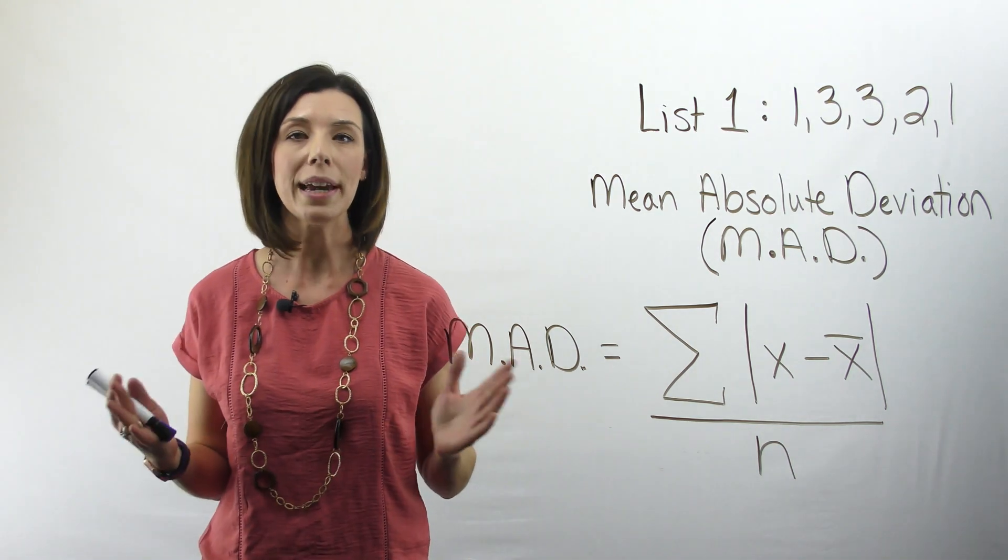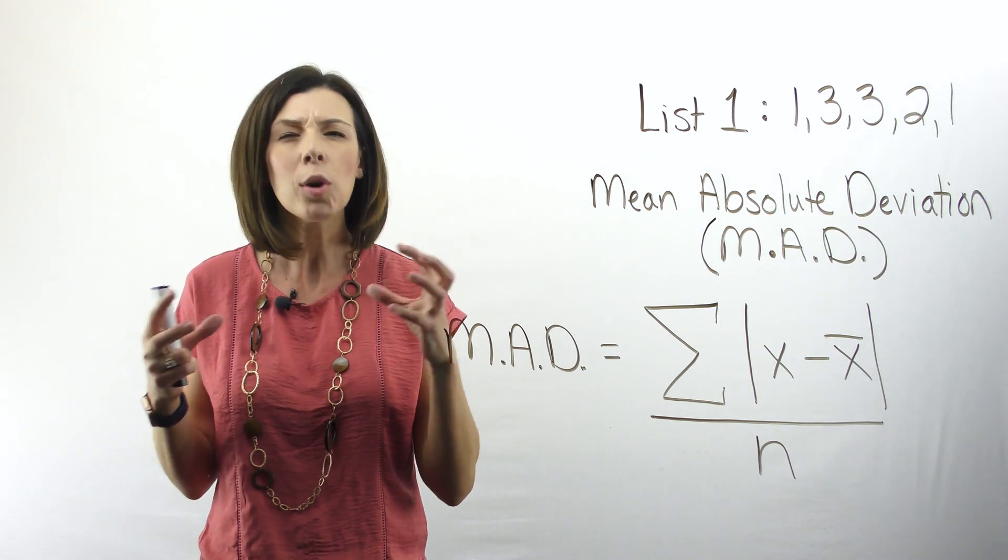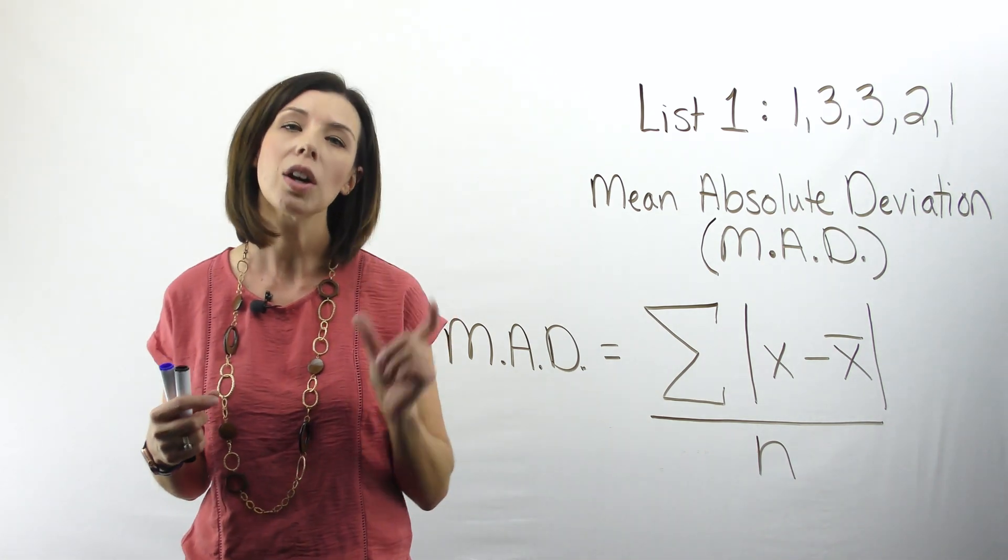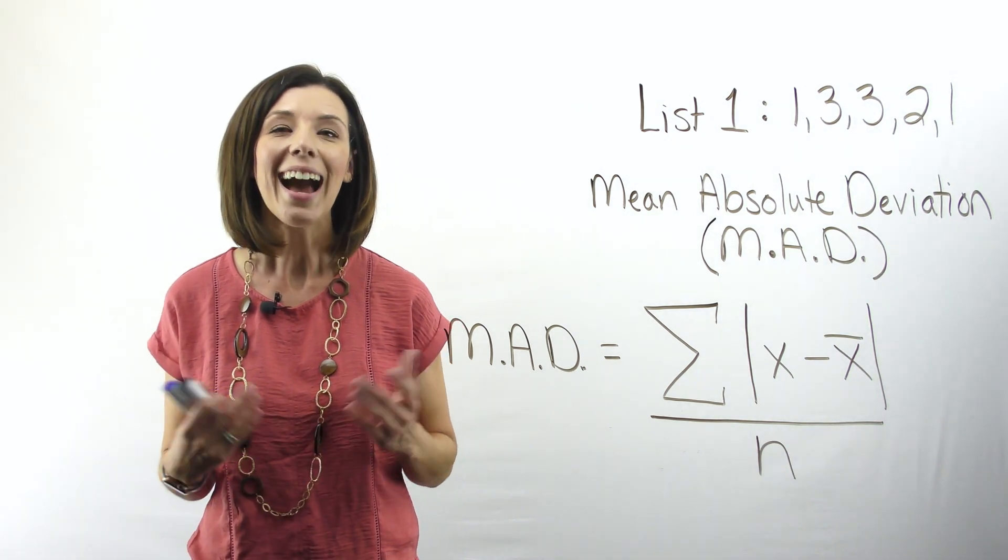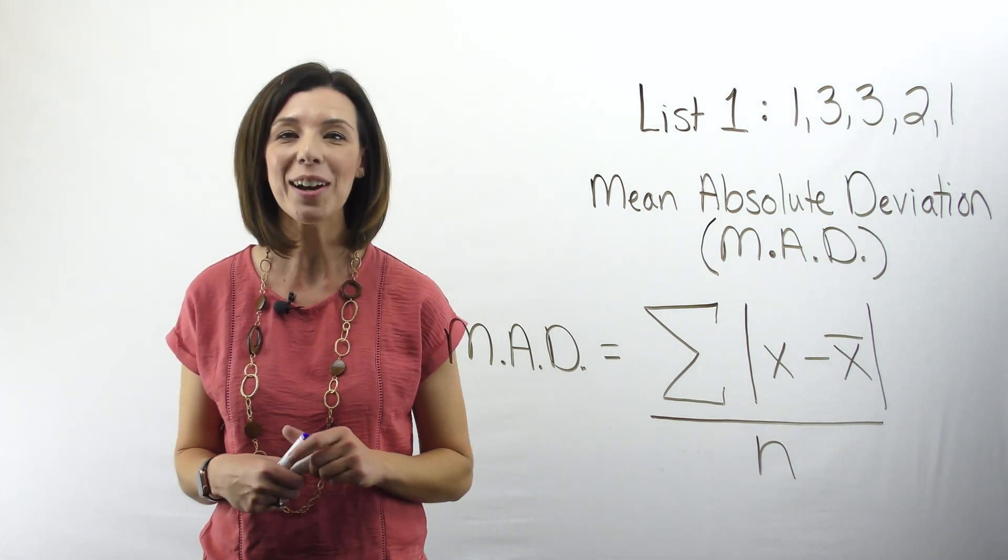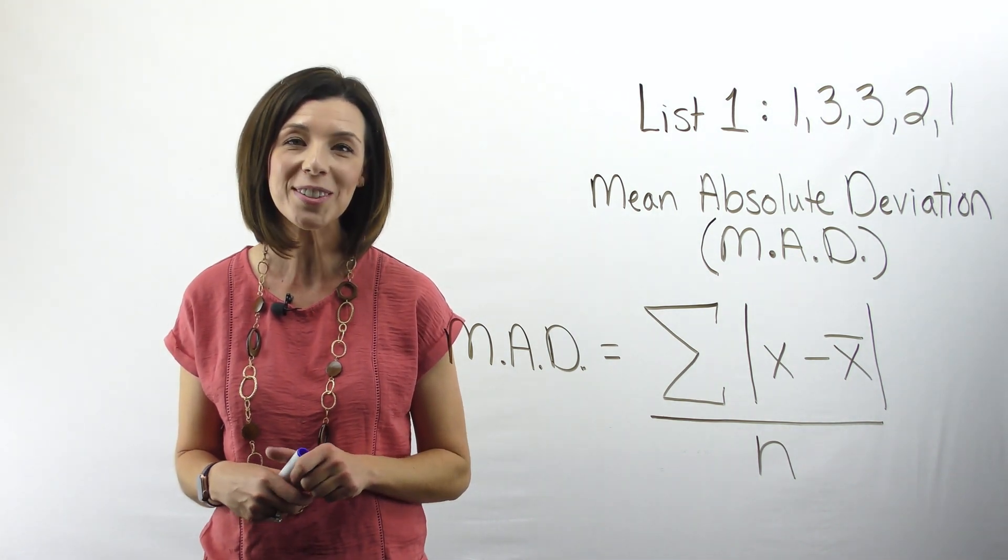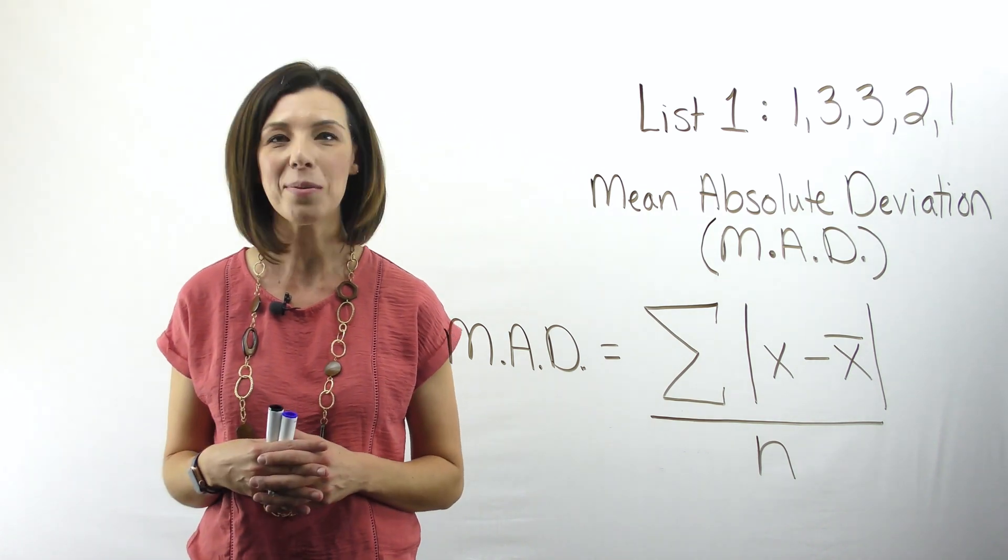So to recap, when we're interpreting the mean absolute deviation, the smaller the MAD, the more clustered our data is; the larger the MAD, the more spread out our data is. I hope you found this video helpful on mean absolute deviation, and you've now got a better idea on how to interpret it and how to calculate it in a more concrete way.